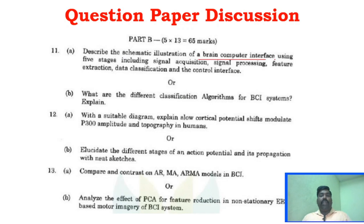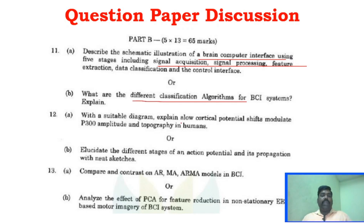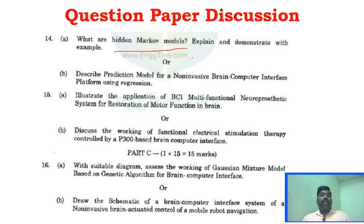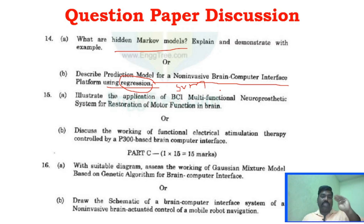In Part B, the questions include: Brain-Computer Interface with Five Stages of Extraction, Different Classification Algorithms, Slow Cortical Potential Shifts, and Different Stages of Action Potential. For Unit 3: PCA models and PCA feature extraction. For Unit 4: Hidden Markov Model and Non-Invasive Brain-Computer Interface using regression. Unit 5 covers restoration of motor function in the brain. Any models from Unit 4 can also be asked.